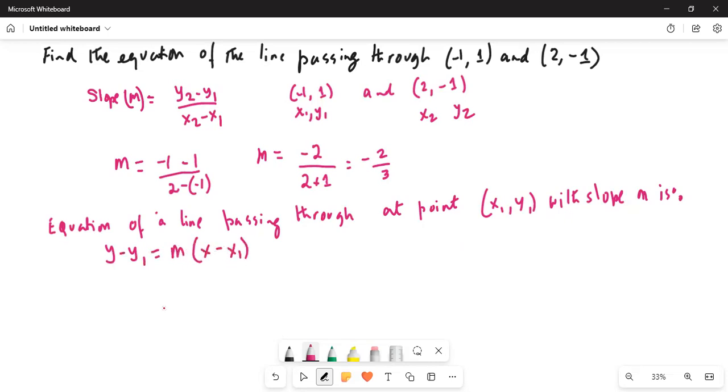So in our case it will be y minus y1. Because y1 is just 1, so it's y minus 1. The y coordinate of the first point is 1 in the ordered pair (-1, 1), so y1 is 1.